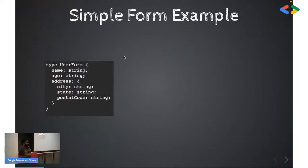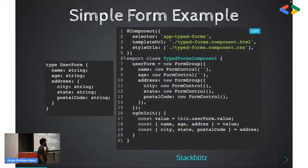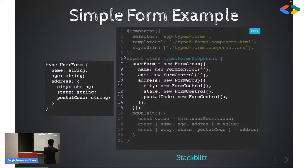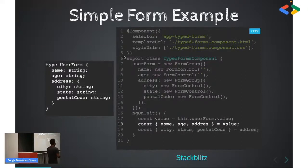Suppose I want to design a user form in Angular. I may have a schema like this: asking for username, age, and then address — which requires another level of detail like city, state, and postal code. If you want to write the same in Angular, you would be using the form API, and the schema is exactly propagated or used in the Angular form API. For each field you have defined something called a form control.